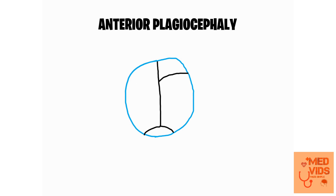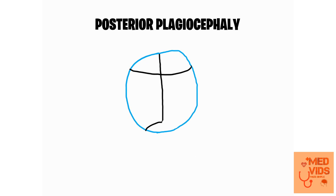Then we have anterior plagiocephaly. In contrast to brachycephaly, what happens here is very early fusion of the coronal suture on only one side — unilateral coronal suture fusion — giving rise to a deformed skull. We also have posterior plagiocephaly, in which the coronal suture is normal but one side lambdoid suture fuses early, leading to skull deformities.